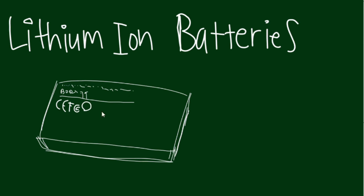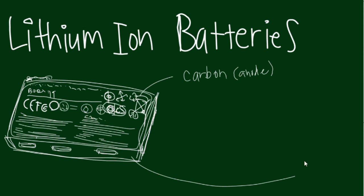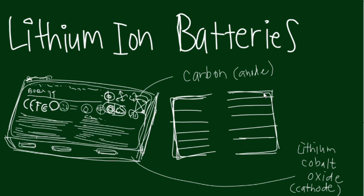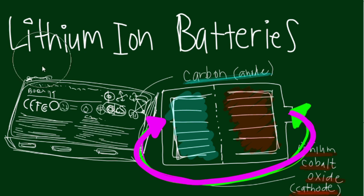Most secondary cells on the market today are lithium-ion batteries. The combination of carbon as an anode and lithium cobalt oxide as a cathode allows electrons to be flowed back and forth through hundreds of charges and discharges.